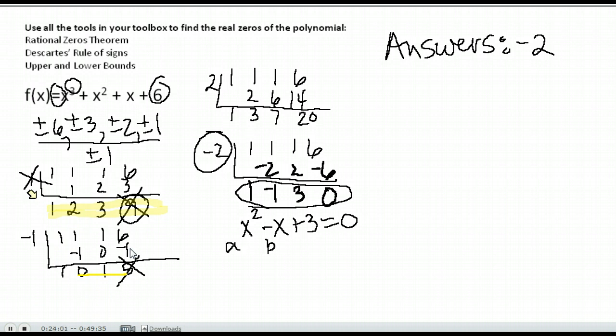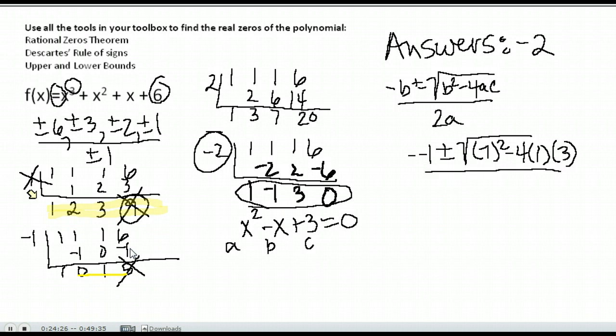Remember, a is that number in front of x squared. b is the number in front of x, and c is the constant. And here is the formula. You'll want to memorize this. You're going to use it so much in this class. So I have negative of negative 1 plus or minus the square root of negative 1 squared minus 4 times 1 times 3, all over 2 times a, which was 1.